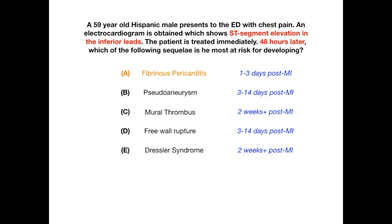In terms of how to think about this, you want to start building a timeline and understand how things change over time. The first part of this question is simply understanding the evolution of the myocardial infarction — very high yield. The high-yield approach is to look at the question and pick out what's important: ST segment elevation tells you there's an MI, and something happening 48 hours later clearly makes this a question about MI evolution.